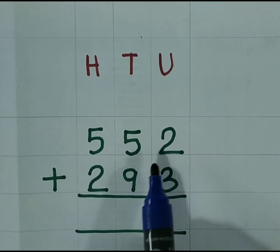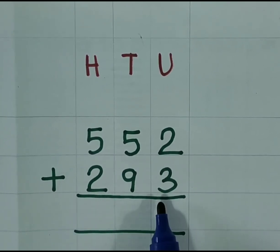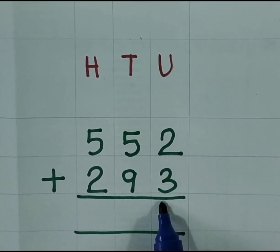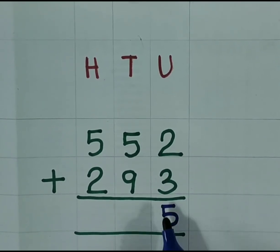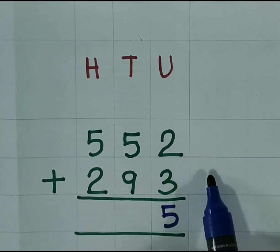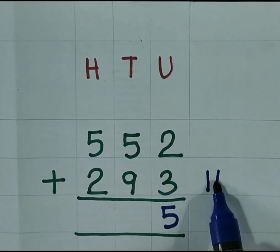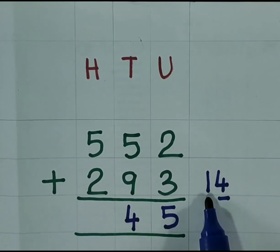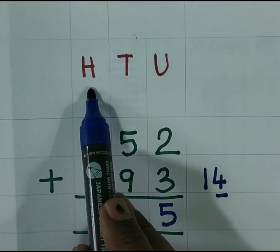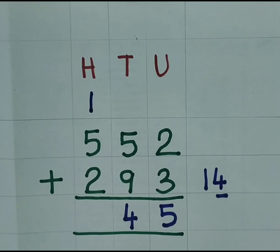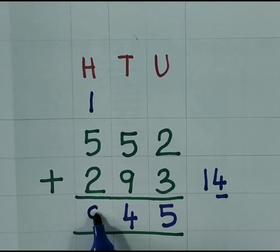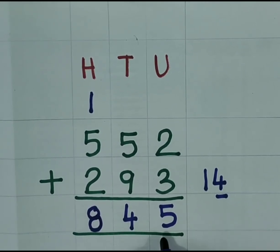552 plus 293. 2 plus 3 is 5. 5 tenths plus 9 tenths is 14 tenths. So 4 tenths you have to write at the 10th place and 1 you have to carry at the 100th place. 1 plus 5 is 6. 6 plus 2 is 8. 845 is the answer.